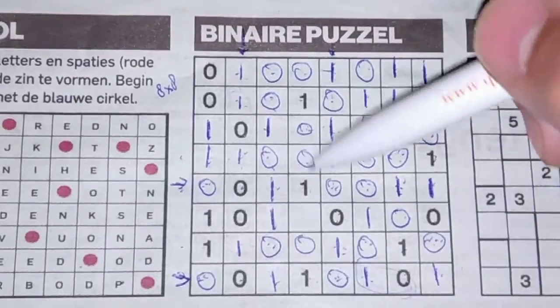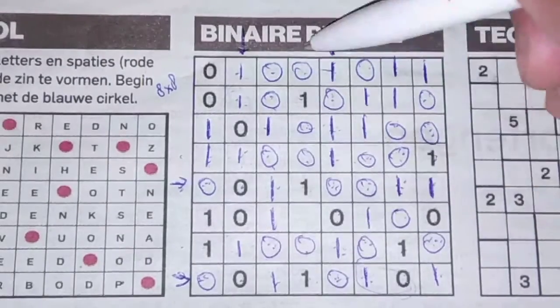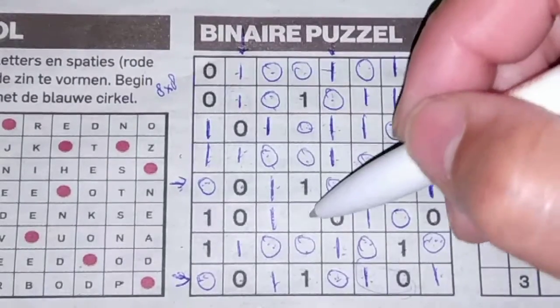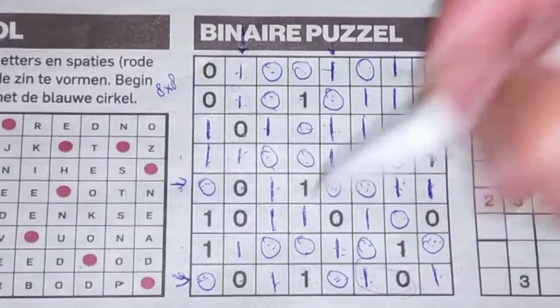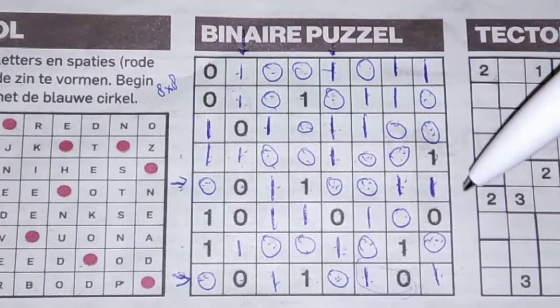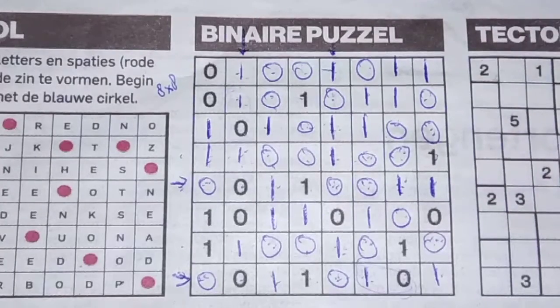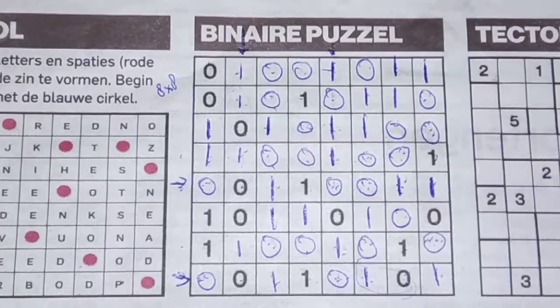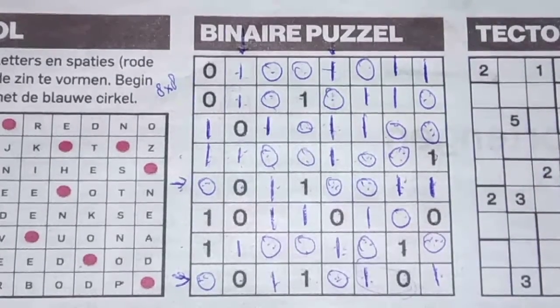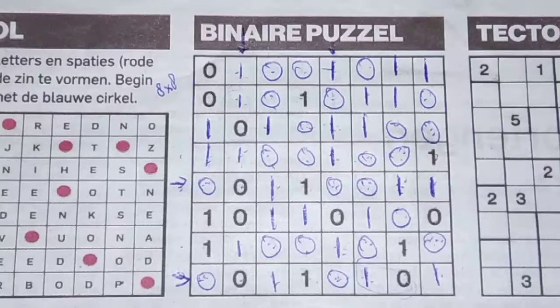We have 4 zeros here, so the rest are ones. 4 zeros again, so the rest are ones. Complete in 5 minutes! Oh wow, great binary Sudoku!